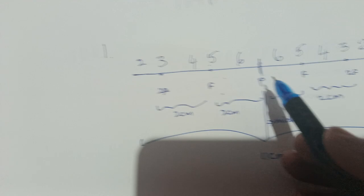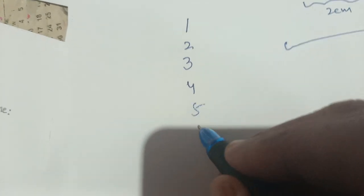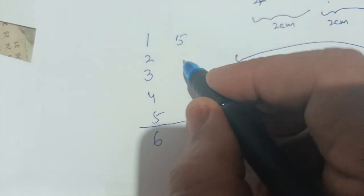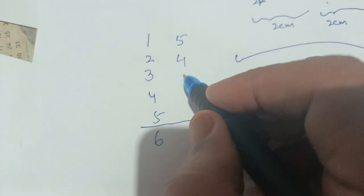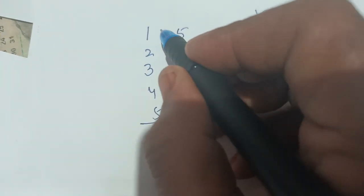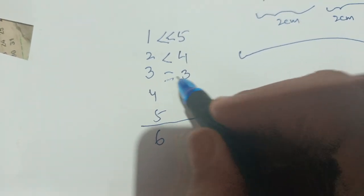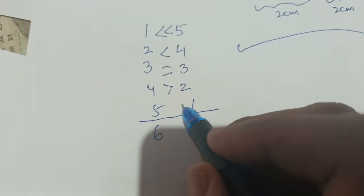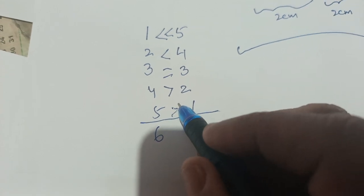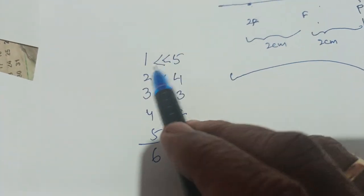Now put it like this: 1, 2, 3, 4, 5, 6 — draw a line, now reverse: 5, 4, 3, 2, 1. You know pretty well that 1 is very much smaller than 5, 2 is smaller than 4, 3 is equal to 3, and 4 is greater than 2.